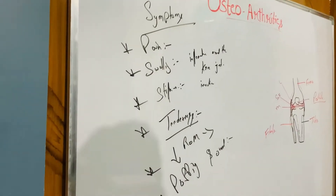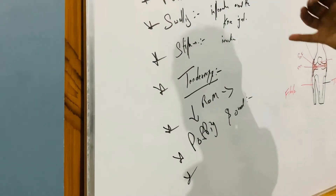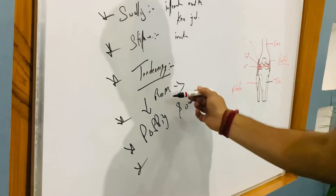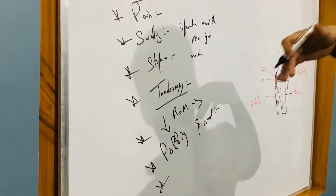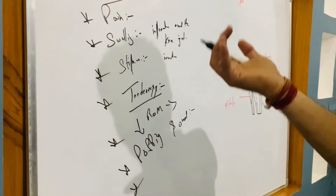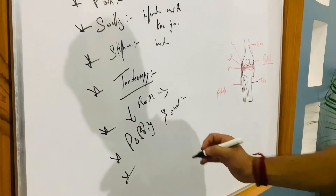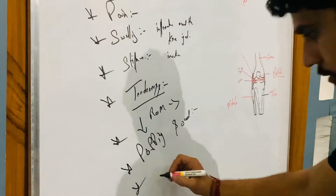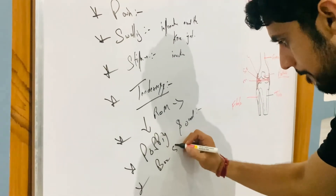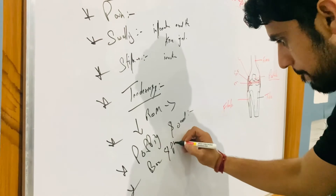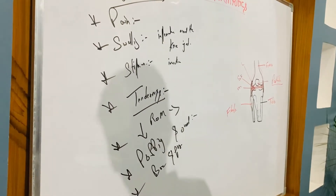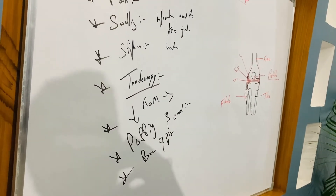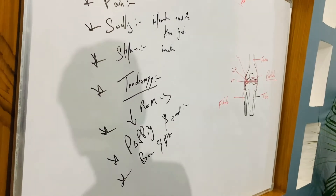So the symptoms of osteoarthritis are: pain, swelling, stiffness, tenderness, decreased range of motion, and popping or cracking sound which is called crepitus. Bone spurs are also a symptom that can occur during osteoarthritis.